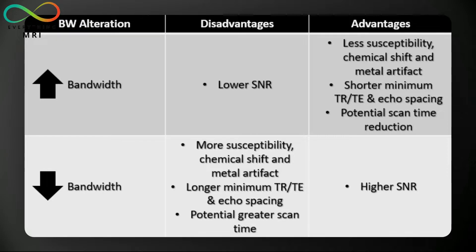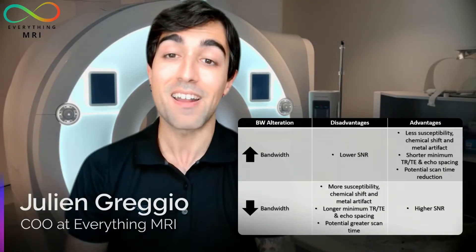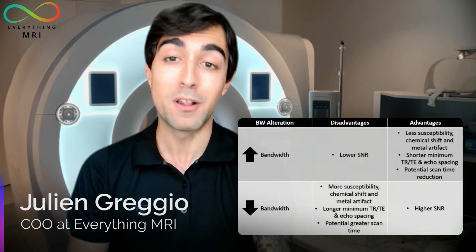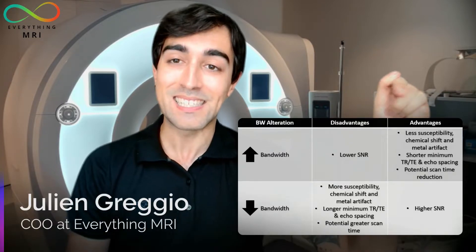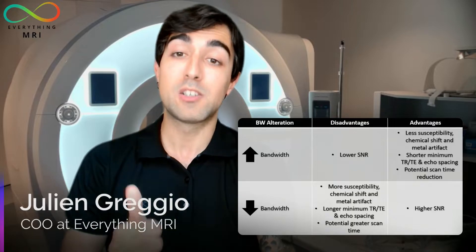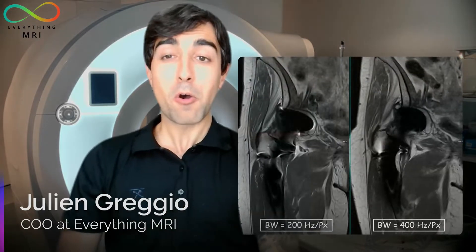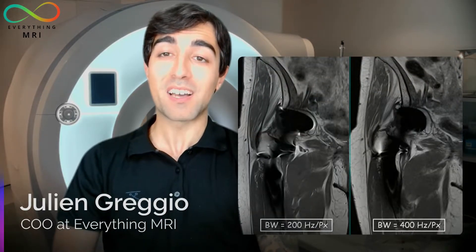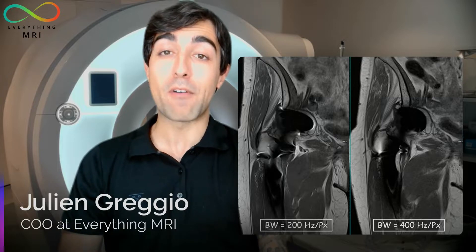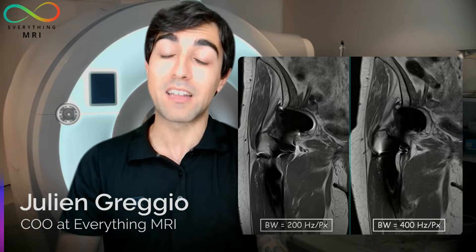Regardless of this, a common action we perform as MR technologists is bringing the bandwidth up. Someone might think: why would we deliberately reduce our SNR? The reason is, as shown in this table, increasing the received bandwidth comes with the major benefit of a reduction of susceptibility, chemical shift, and especially metal artifacts. We mentioned in the MARS video that boosting this parameter will have a major impact on reducing in-plane distortions on images potentially affected by metal implants.